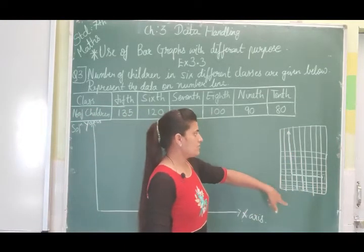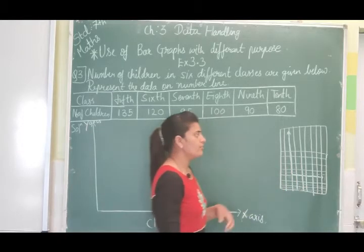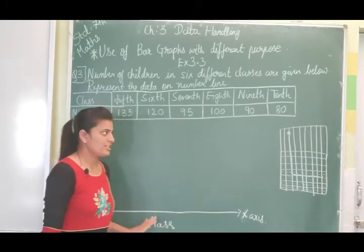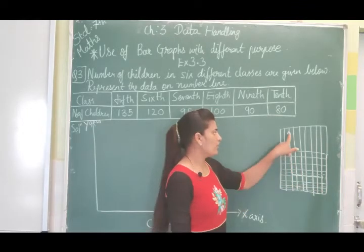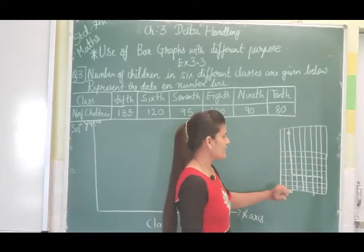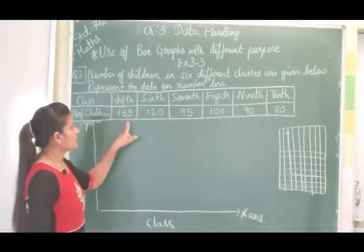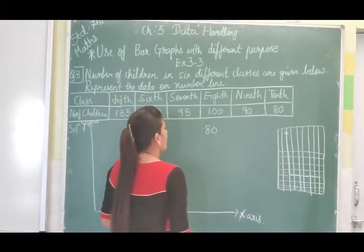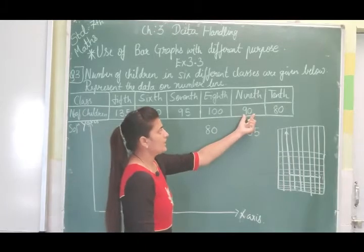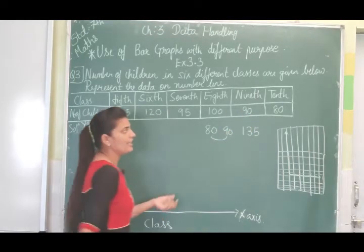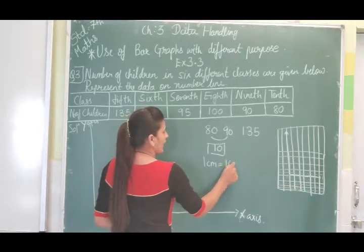Your graph paper will have horizontal and vertical lines. First, you have to draw the y-axis and x-axis. I have drawn these on the graph paper. Now, how to take the scale: here you can see the smallest number is 80 and the largest number is 135. The difference between 80 and 90 is 10, so we can take the scale as 1 centimeter is equal to 10 children.